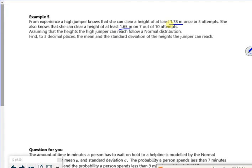Assuming that the heights the high jumper can reach follow a normal distribution, find to three decimal places the mean and the standard deviation. Right then, so let's have a look at this one.